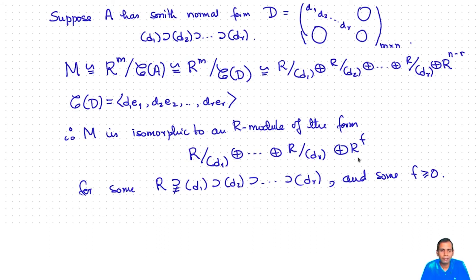Every finitely generated R-module is a direct sum of a finite number of cyclic modules. Moreover, we can assume that the generators have this containment property, which is equivalent to d1 divides d2 divides di and so on. Now the question is, is this decomposition unique?